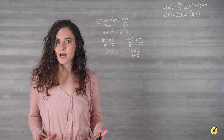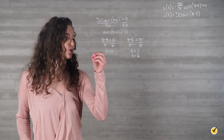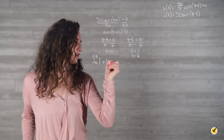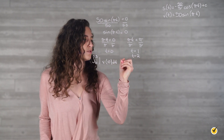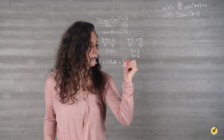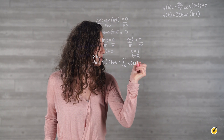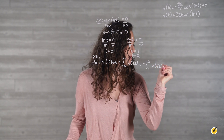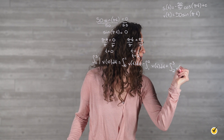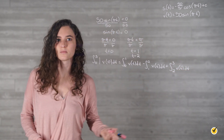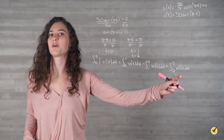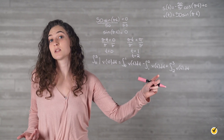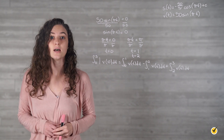Our integral for determining Ashton's distance traveled is then chopped into sections. Since we want the distance traveled from 0 to 3, we integrate the absolute value of the velocity function. This equals the integral from 0 to 1 of v(t) dt, minus the integral from 1 to 2 of v(t) dt, plus the integral from 2 to 3 of v(t) dt. The first and third chunks correspond to parts where velocity is positive, while the middle chunk corresponds to the negative portion and is subtracted to make it positive.